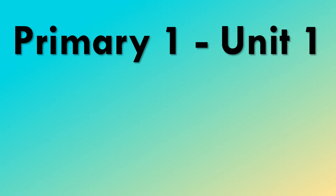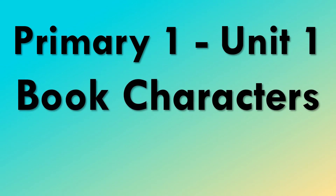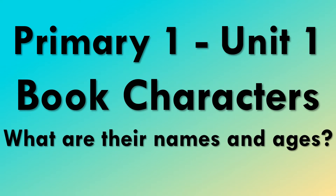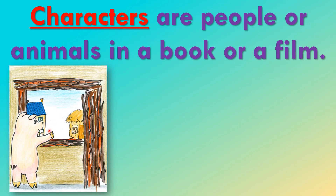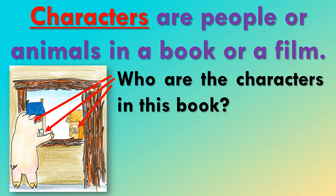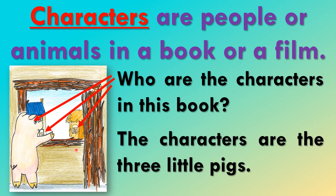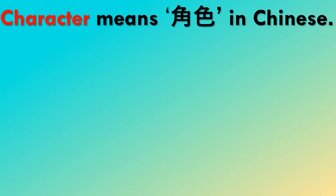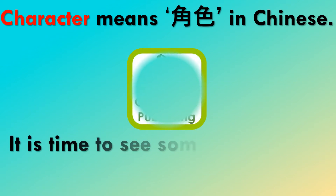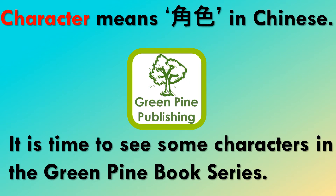Primary one, unit one: book characters — what are their names and ages? Characters are people or animals in a book or a film. Here is a book cover with no title. Who are the characters in this book? The characters are the three little pigs: one, two, three. The word 'character' in Chinese means 人物. It is time to see some characters in the Green Pine book series.